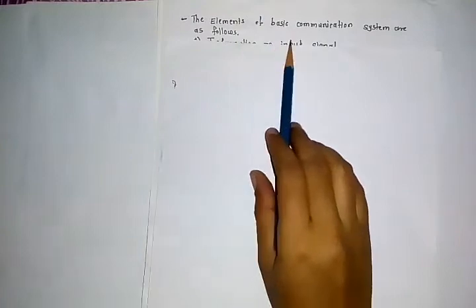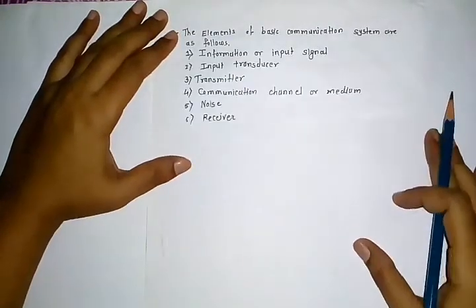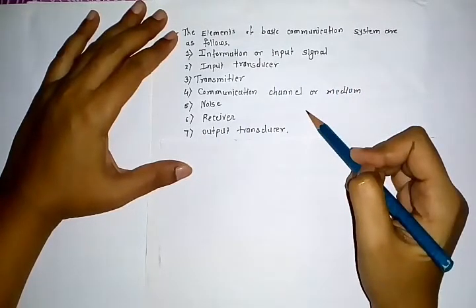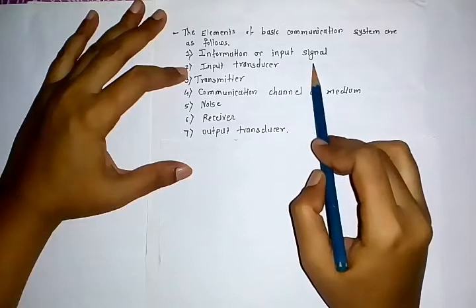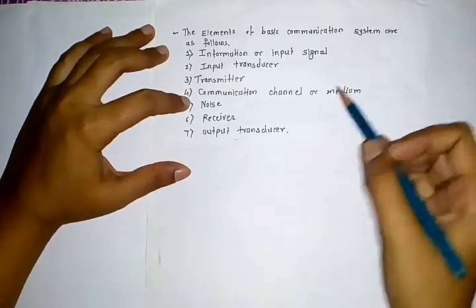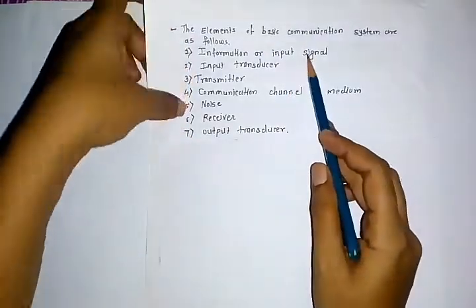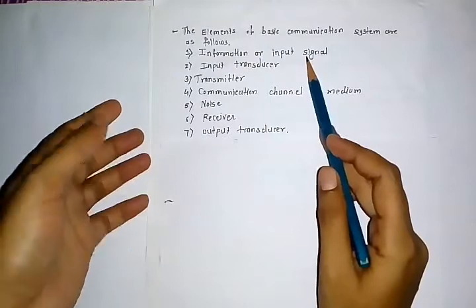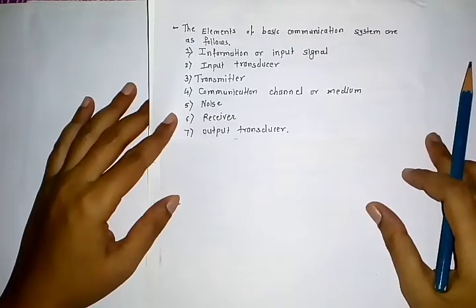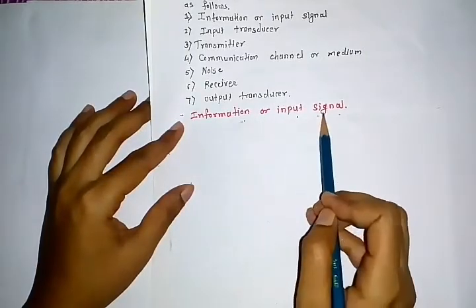Now we see the detailed explanation of the block diagram one by one. The elements of the basic communication system are as follows: information or input signal, input transducer, transmitter, communication channel or medium, noise, receiver, and output transducer — seven blocks in total.